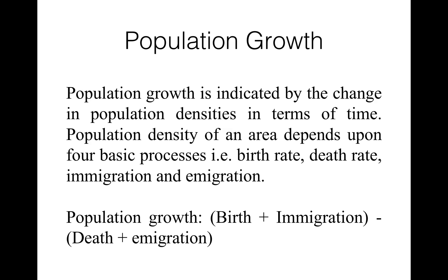Population growth can be indicated by changes in population densities in terms of time. Population density of an area is the number of individuals per unit area in a region, expressed as: population density = number of individuals / unit area. Population density depends upon four basic processes: birth rate, death rate, immigration, and emigration.